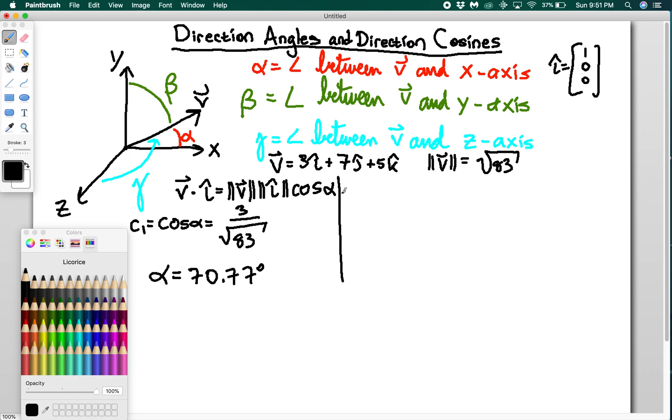You can then find beta the same way. You do v dot j hat equals magnitude of v times magnitude of j times cosine of beta. Do the same thing for gamma using k hat. So you get v dot k equals magnitude of v times magnitude of k times cosine gamma.